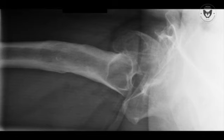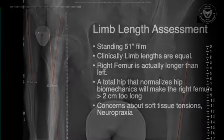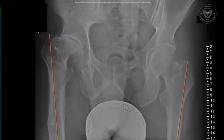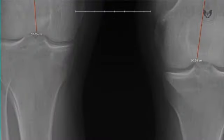This prompted me to get a leg length assessment. In this case, it's a standing 51-inch cassette film or stitched film, which revealed that while his clinical leg lengths were equal, there was about a two and a half centimeter area of regenerate bone. This meant that if a total hip arthroplasty was performed in the usual fashion, we would end up with a leg length inequality as a consequence of the iatrogenic deformity created below the lesser trochanter.